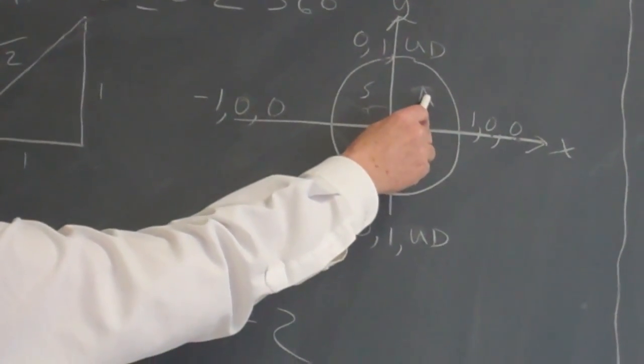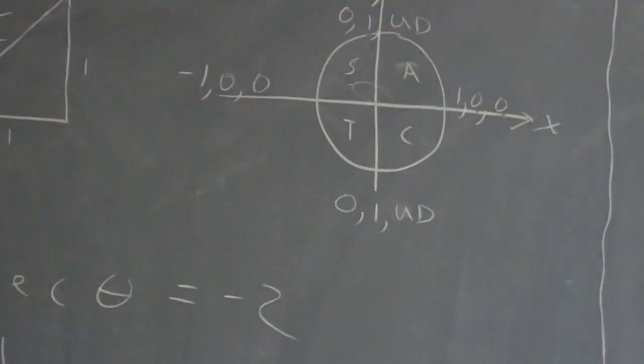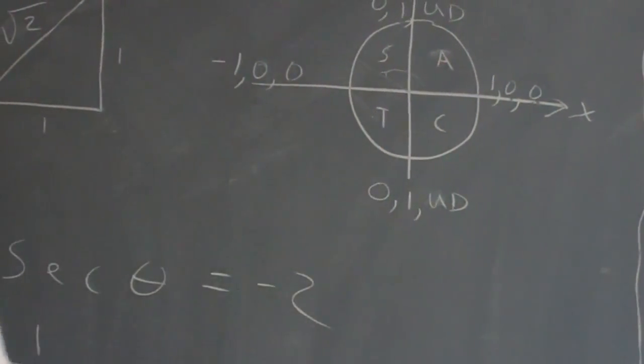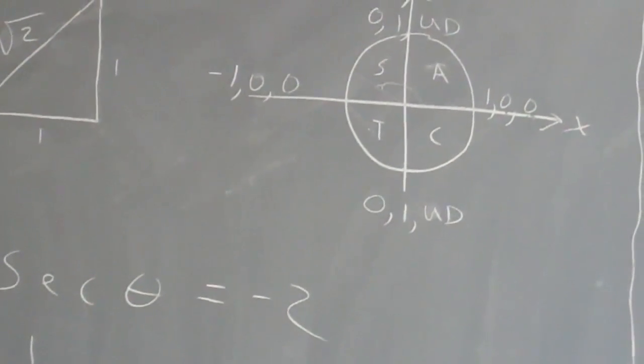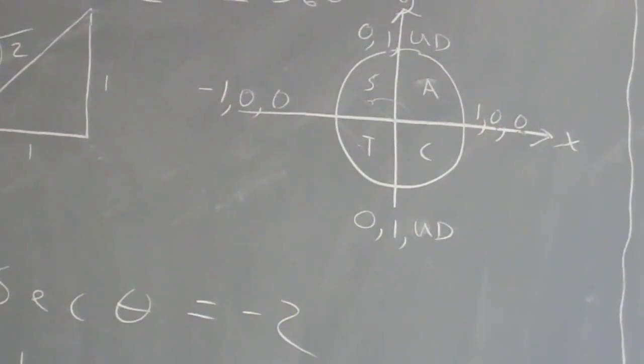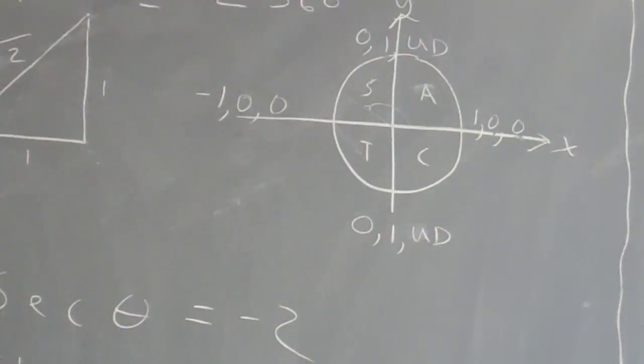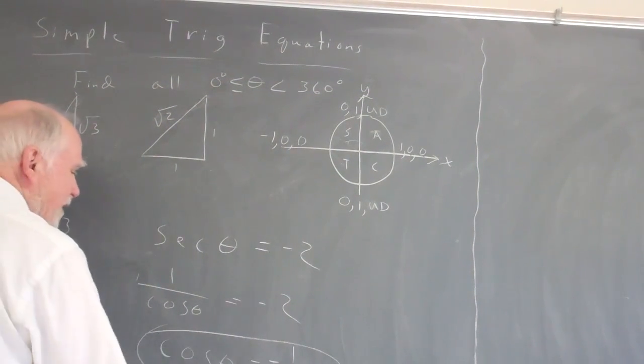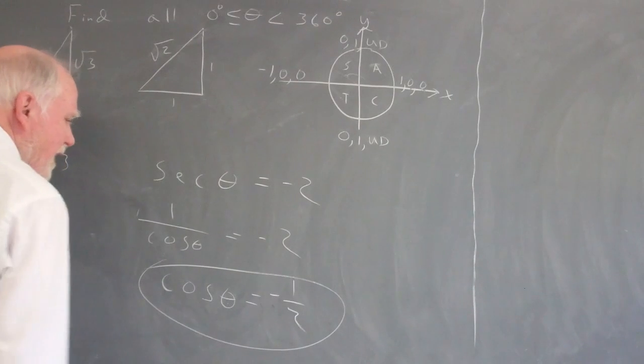All three of them are positive here. Only the sine is positive here. Only the tangent is positive here. And only the cosine is positive here. So the second quadrant and the third quadrant have negative ranges for the cosine. In other words, I will get negative stuff when I put those angles in there. It will give me a negative answer.